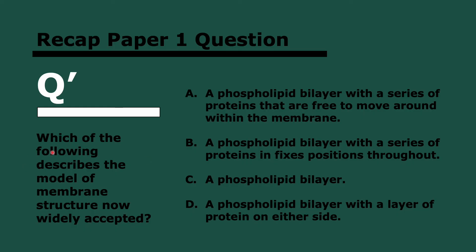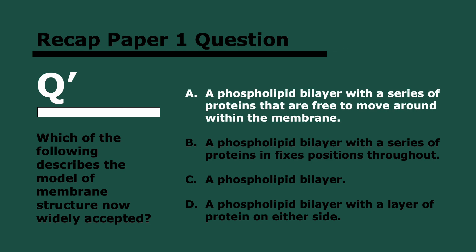Finally: which of the following describes the model of membrane structure now widely accepted? The answer is A — a phospholipid bilayer with a series of proteins that are free to move around within the membrane. Option C describes it as just a phospholipid bilayer, which does not describe it entirely. Option B is incorrect because the proteins are not fixed — they don't have fixed positions; they can move. That's the fluid mosaic model. And it does not have a layer of proteins on either side; the proteins are embedded throughout or on the surface at distinct points. So the answer is A.